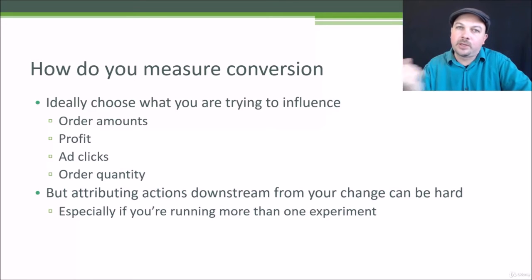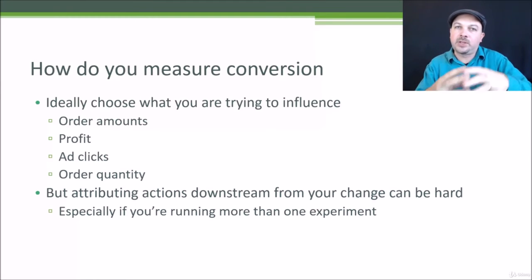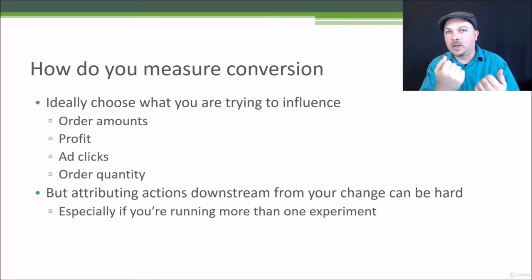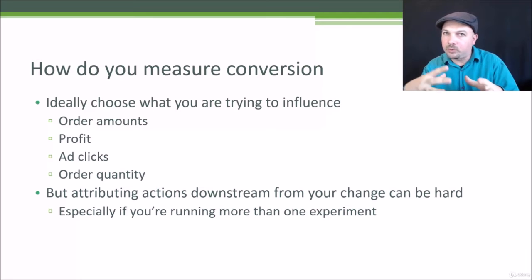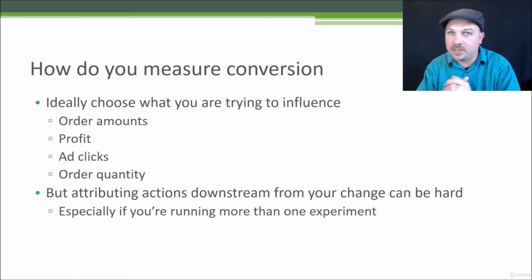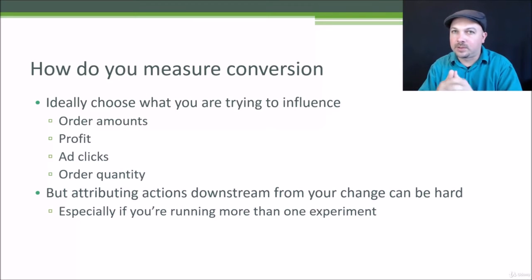Another thing to watch out for is attributing conversions to a change downstream. If the action you're trying to drive doesn't happen immediately upon the user experiencing the thing you're testing, things get dodgy. If I change the color of a button on page A, the user goes to page B, and ultimately buys something from page C — who gets credit for that purchase? Is it page A or page B? Do you discount the credit depending on how many clicks it took to reach the conversion? It's very easy to produce misleading results by fudging how you account for those distances.